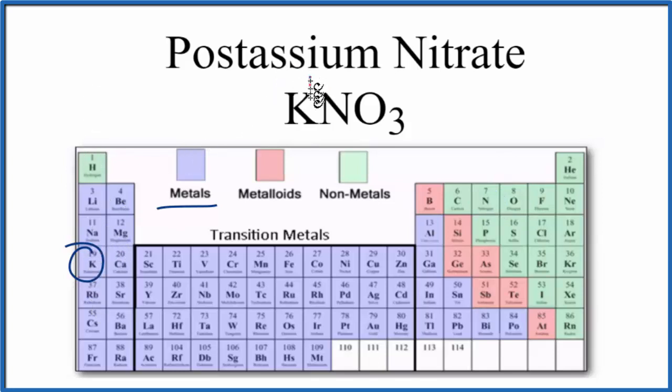The nitrate ion is a polyatomic ion you should memorize. The whole nitrate ion has a charge of one minus. The positive potassium ion and the negative nitrate ion are attracted - they're opposites, and that forms the ionic bond between the potassium and the nitrate.